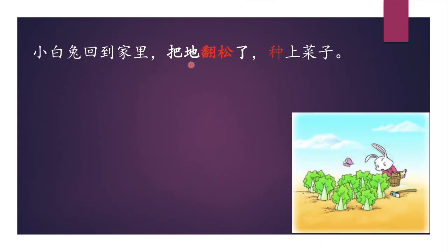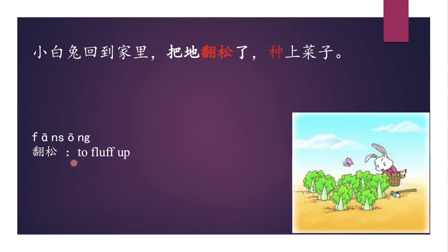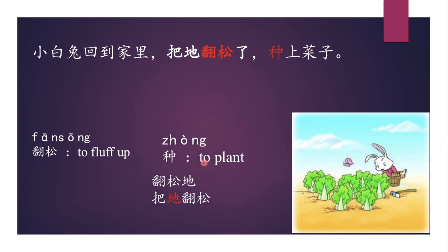小白兔回到家裡，把地翻鬆了，種上菜籽。 When the little white rabbit went home, this is a 把 sentence again. The original word order would be 翻鬆地。 翻鬆 means to fluff up or loosen. 把地翻鬆 — he loosened the dirt. 種上菜籽 — planted the seeds.